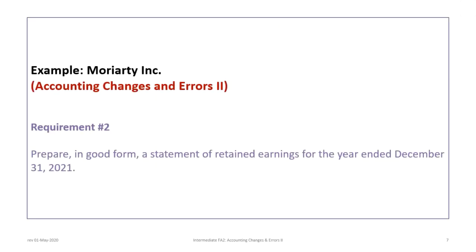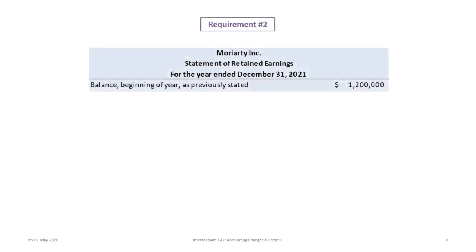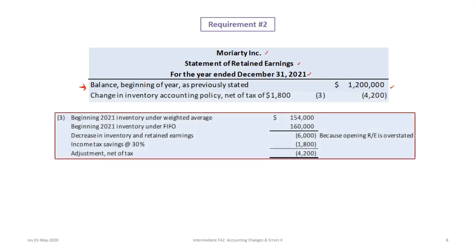Requirement two is preparing in good form a statement of retained earnings for the year ended December 31, 2021. The statement is for Moriarty Inc. We always start with the balance at the beginning of the year as previously stated: $1,200,000. The first adjustment is the change in accounting policy — under weighted average inventory should be $154,000 versus $160,000 under FIFO, a $6,000 decrease. That $6,000 times 30% tax gives $1,800, so we deduct $4,200 from beginning retained earnings due to the change in accounting policy.